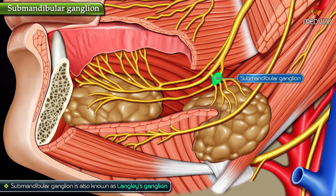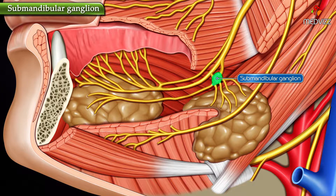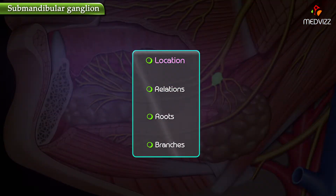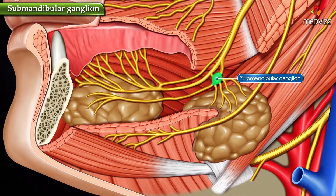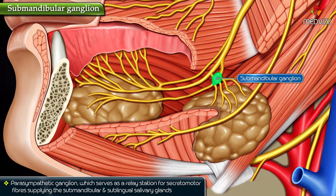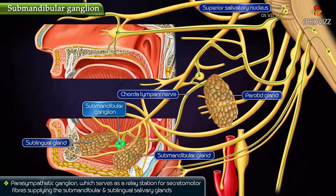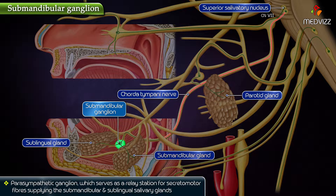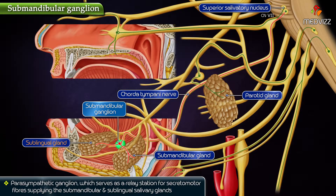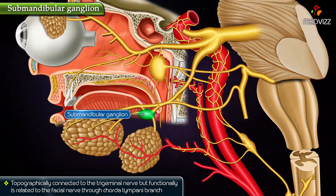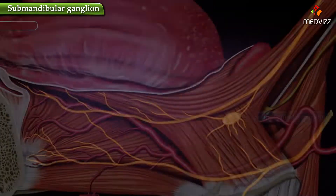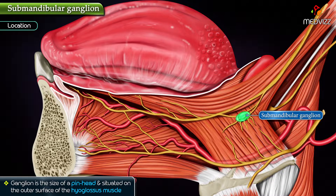Submandibular Ganglion, also called Langlase Ganglion. In this topic we will be discussing the location, relations, roots, and branches. The submandibular ganglion is a parasympathetic ganglion which serves as a relay station for secretomotor fibers supplying the submandibular and sublingual salivary glands. Topographically it is connected to the trigeminal nerve, but functionally it is related to the facial nerve through its chorda tympani branch.